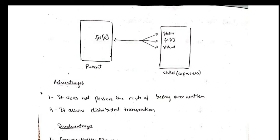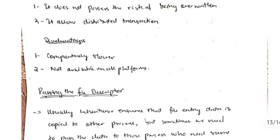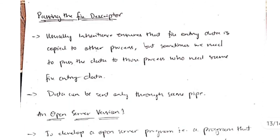The advantage is that it does not possess the risk of being overwritten and it also allows the distributed transaction. The disadvantage includes that it's comparatively slower than the other pipes and it's not available on all the platforms.